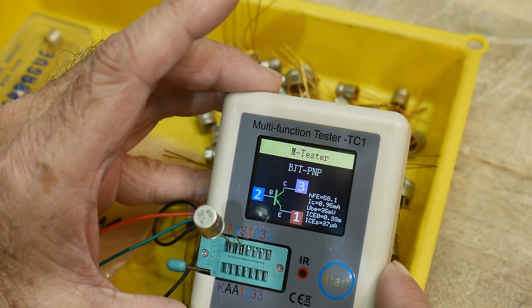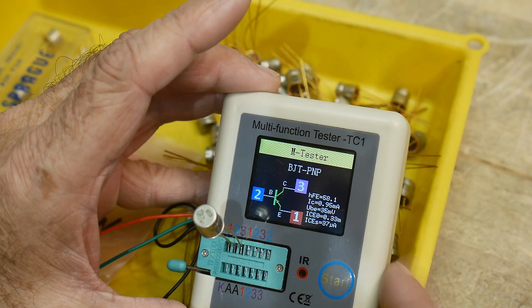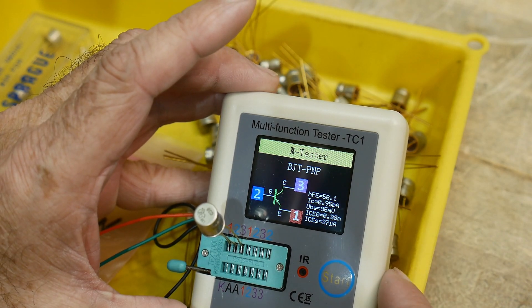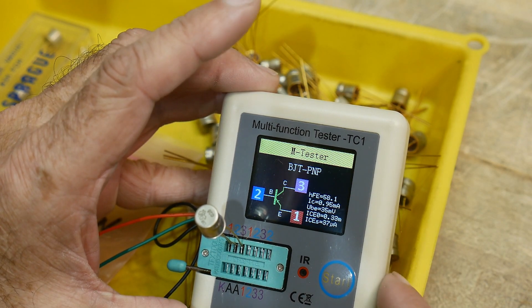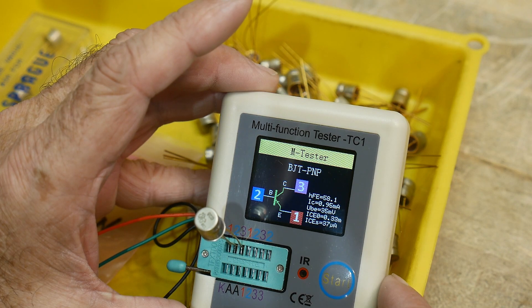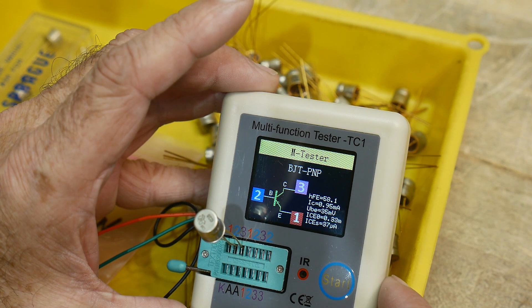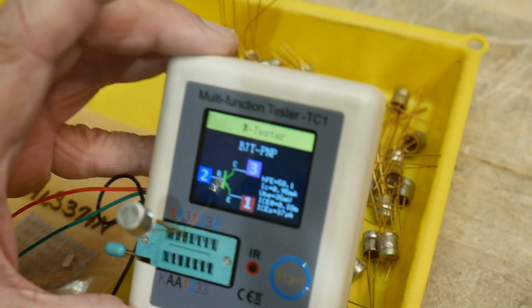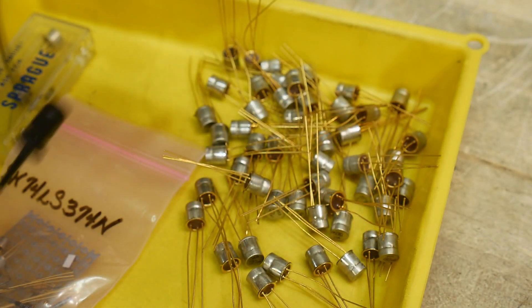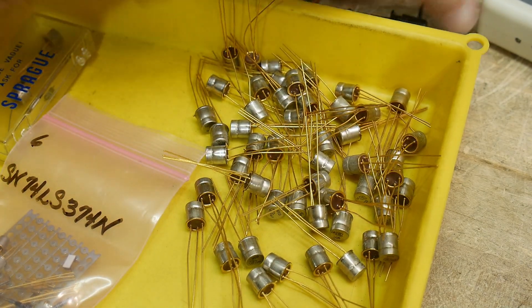And it says it's a PNP, bipolar PNP, beta of 58, 1 milliamp. Yeah, VBE of 35 millivolts. That's pretty low. Anyway, yeah, so they're a transistor of dubious value.